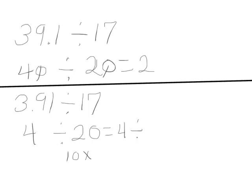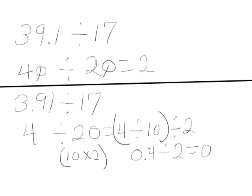So this would be 4 divided by 10, and we'll divide that by 2. 4 divided by 10 is 4 tenths, and 4 tenths divided by 2 is 2 tenths.